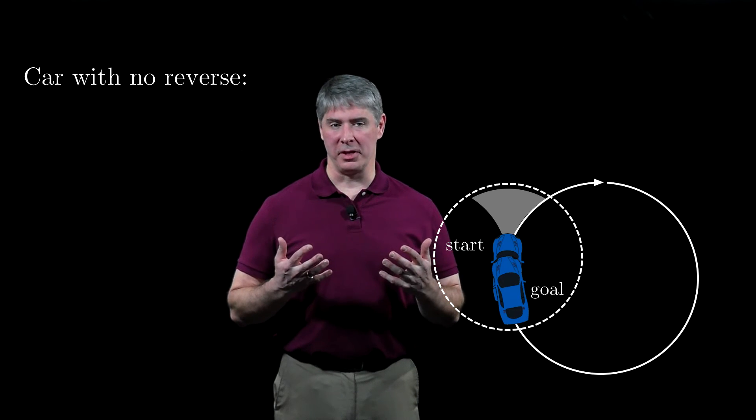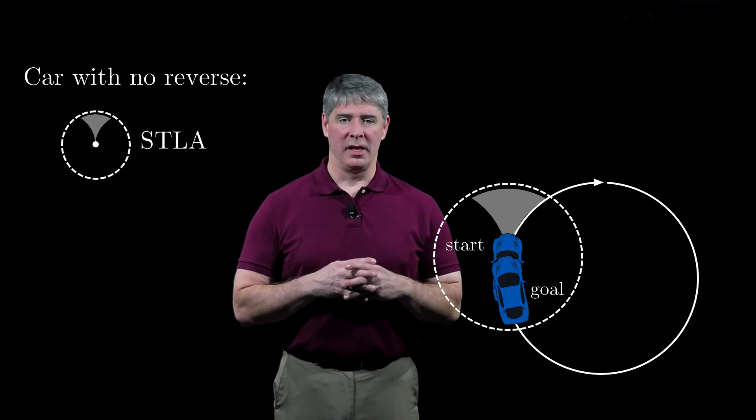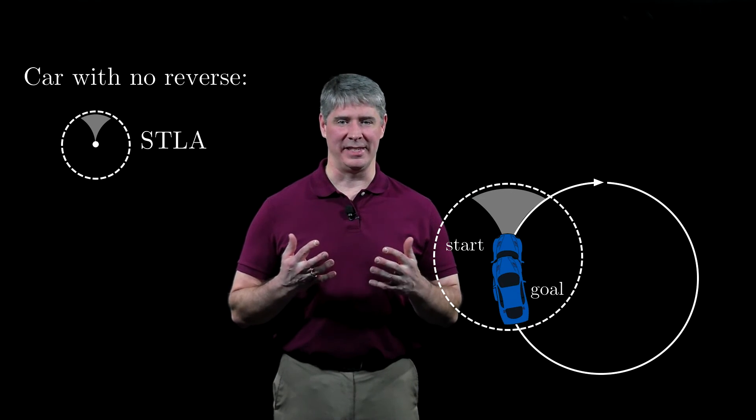The locally reachable set is three-dimensional, but it's not a neighborhood of the initial configuration. Therefore, this car is STLA, but not STLC.